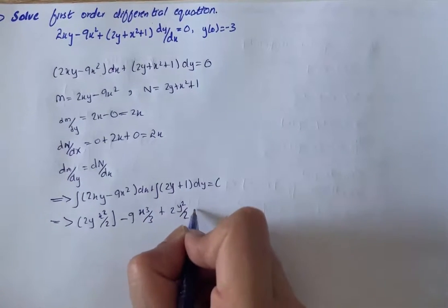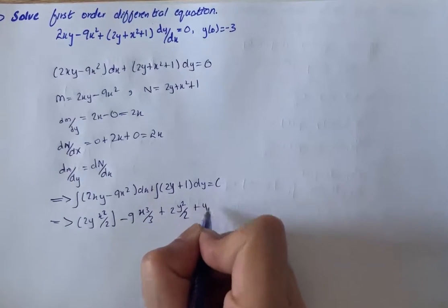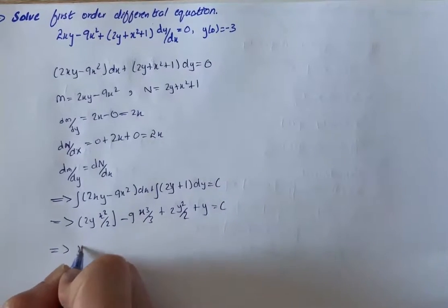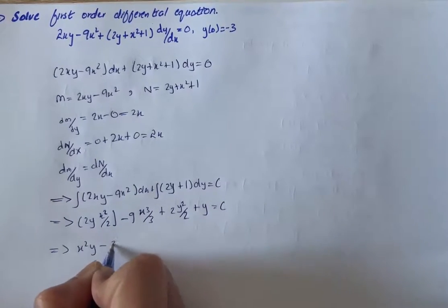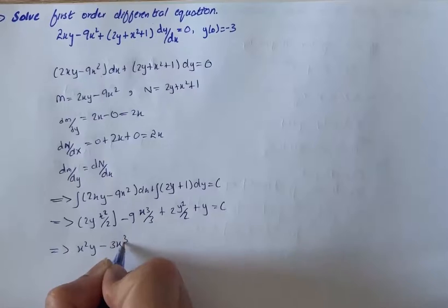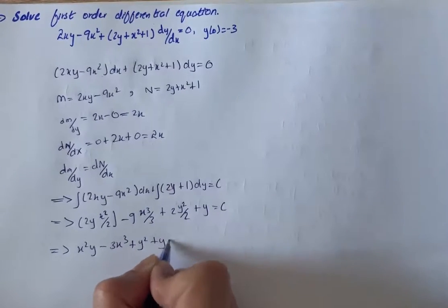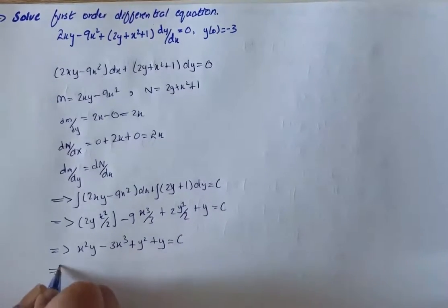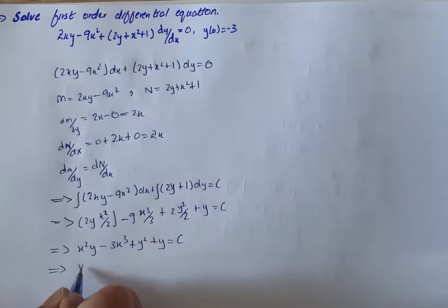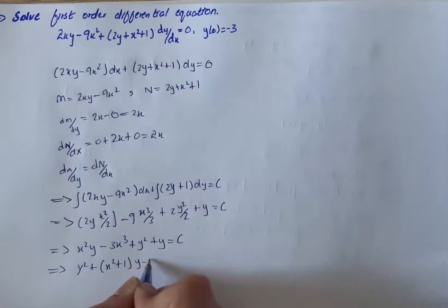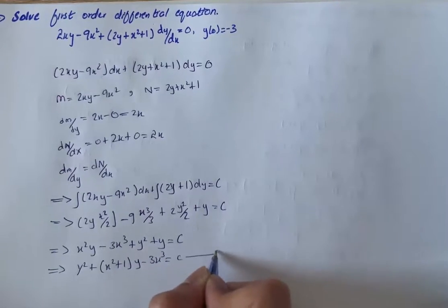Simplifying: 2y squared over 2 plus y equals C. On further simplification this gives us x squared y minus 3x cubed plus y squared plus y equals C, which we can write as y squared plus (x squared plus 1)y minus 3x cubed equals C. Let this be equation 1.